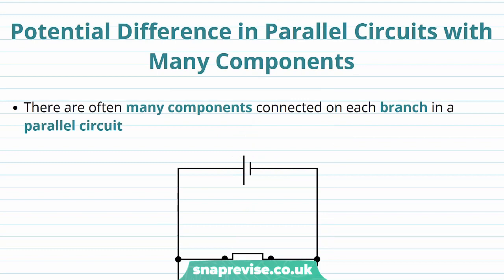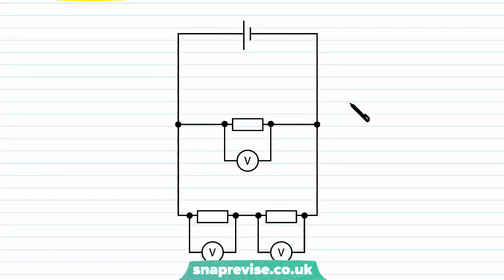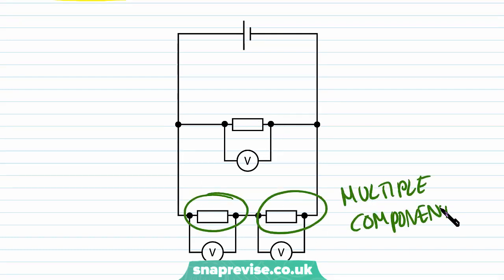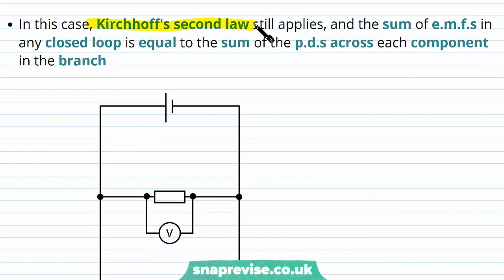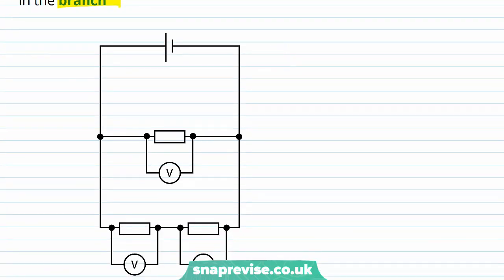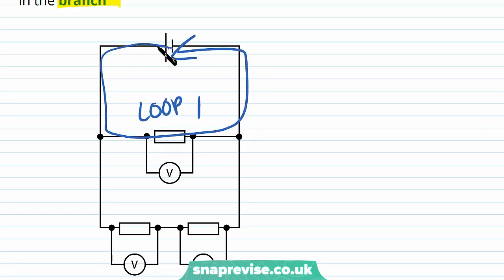Now let's look at potential difference in a parallel circuit with many components. There are often many components connected on each branch. For example, the first branch has one component but the second branch has multiple components. In this case, Kirchhoff's second law still applies — the sum of the EMFs in any closed loop equals the sum of the potential differences across each component in the branch. We've still got two loops: loop one and loop two.